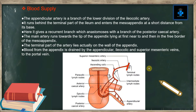Blood supply: the appendicular artery is a branch of the lower division of the ileocolic artery. It gives a recurrent branch which anastomoses with a branch of the posterior cecal artery. The main artery runs down towards the tip of the appendix, lying at first near to and then in the free border of the mesoappendix. The terminal part of the artery lies actually on the wall of the appendix.